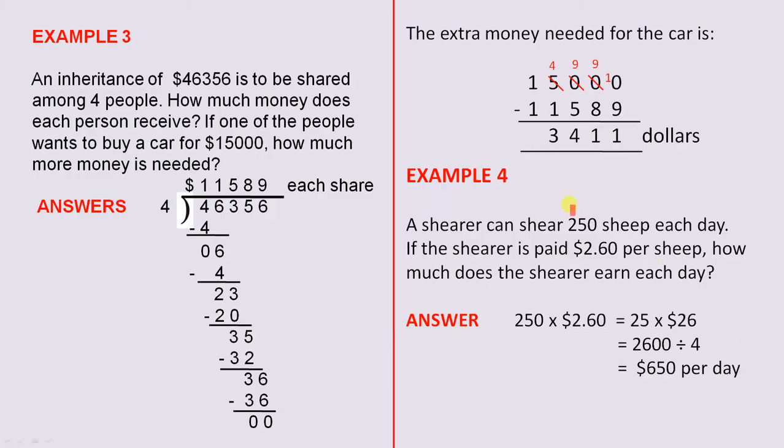Example 3: An inheritance of $46,356 is to be shared among 4 people. How much money does each person receive? If one of the people wants to buy a car for $15,000, how much more money is needed?